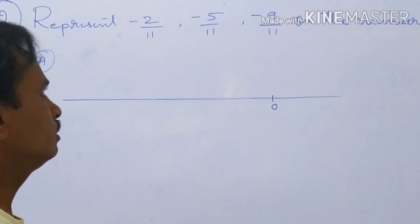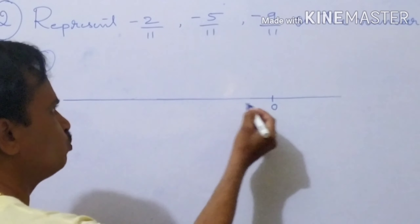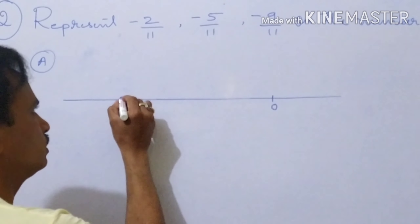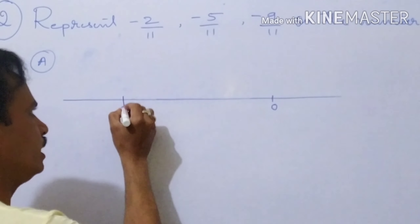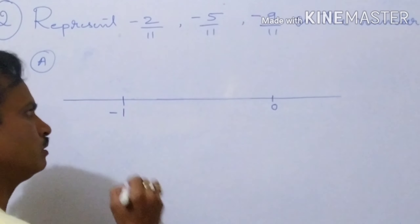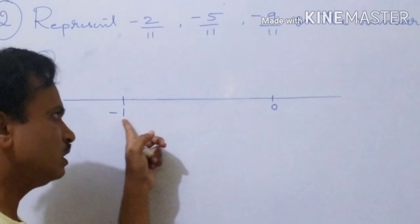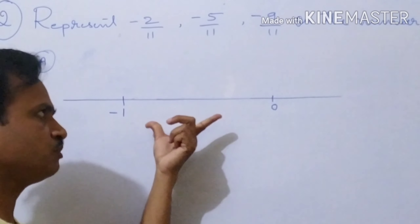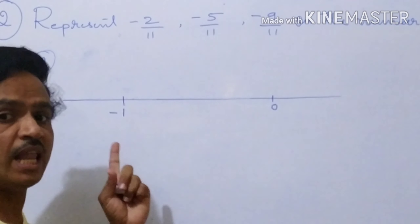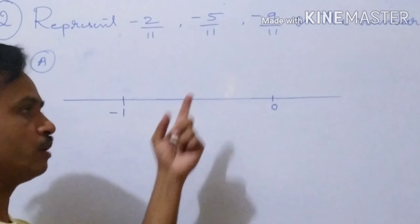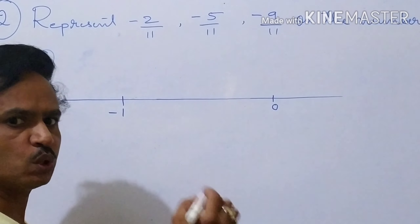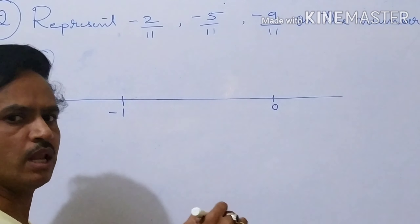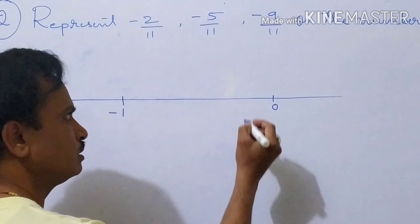Now here denominator 11 is given, that means 0 to minus 1 — I will take minus 1 at any point. Now in this part, we should make 11 parts, because denominator given is 11, so here we should make 11 parts.